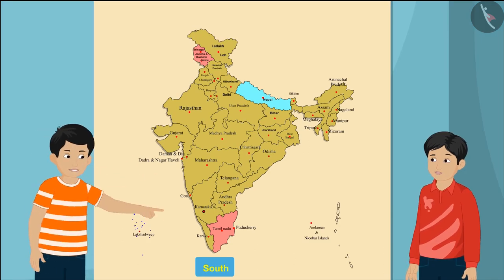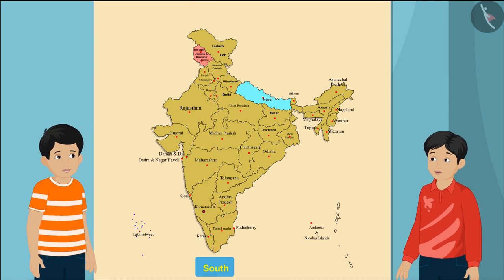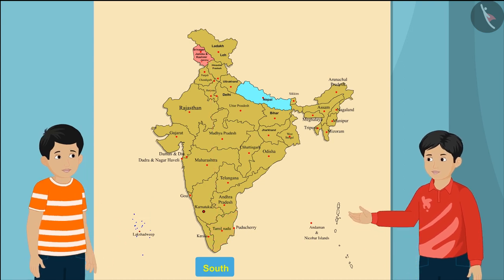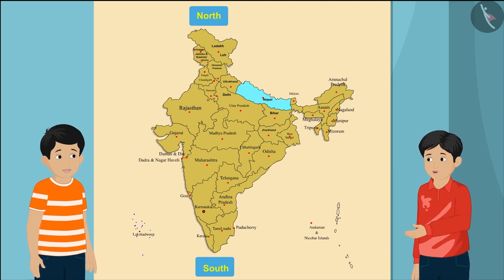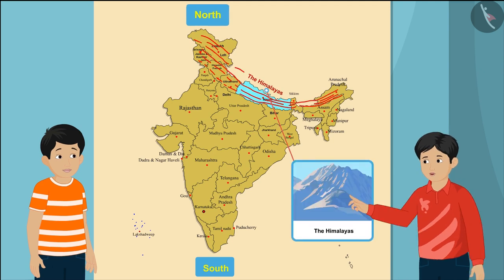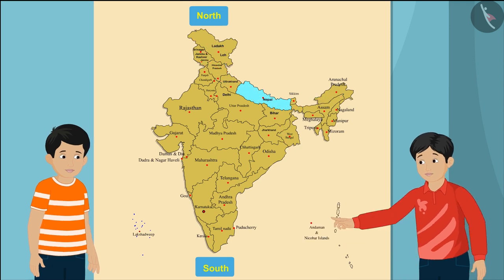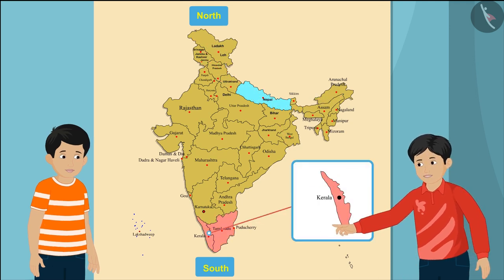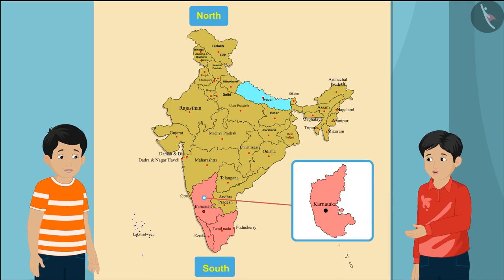Jammu and Kashmir and Tamil Nadu are in opposite directions! Yes, Raju — Jammu and Kashmir is in the northern part of India. Not only this, do you know that the vast Himalayan mountain range is also in the northern part of India? And see this — Tamil Nadu, Kerala, and Karnataka — all these states are in the southern part of India.